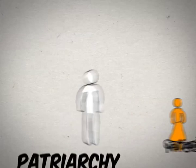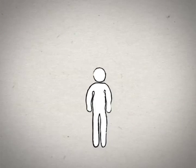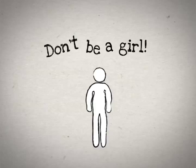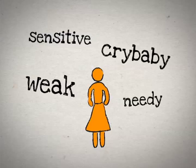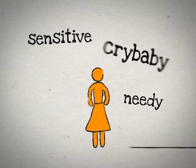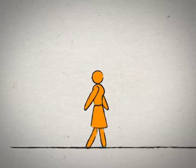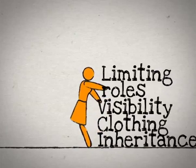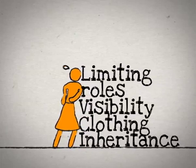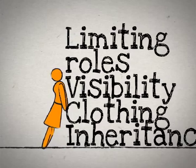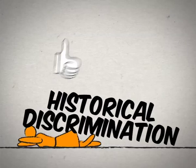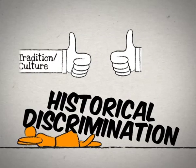For example, you will often hear boys and men being told not to be a girl. This happens because patriarchy views womanhood as weakness, and it is valued less compared to men. In many countries, women face obstacles due to cultural and religious practices. As a result of these beliefs and practices, women have suffered historical discrimination.